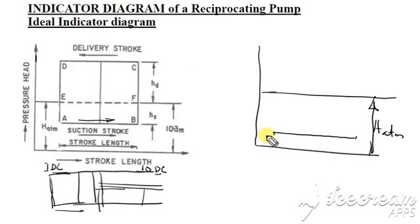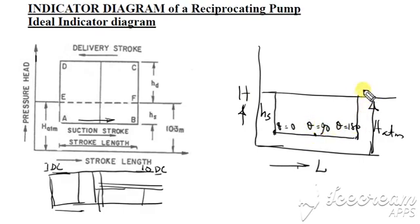The suction pressure or suction pressure head will be at this level. Ideally there is no variation shown over here. This diagram is ideal without considering the effect of friction and effect of acceleration of liquid. This is actually your HS, the suction head which is vacuum, and above atmospheric above the zero level you can write this is H and this one is stroke length. Theta is equal to zero is here and theta is equal to 180 here, and in the middle theta is equal to 90, constant at this level.